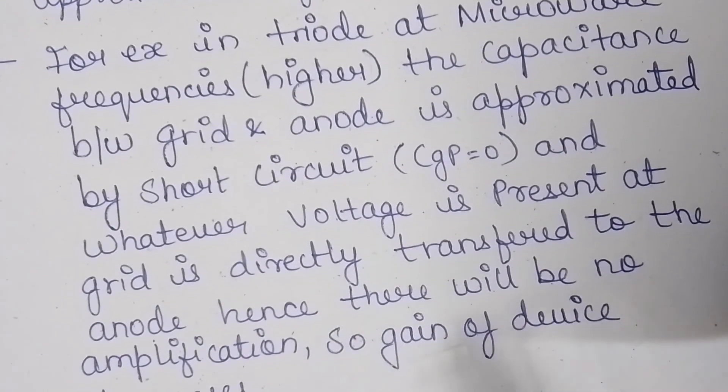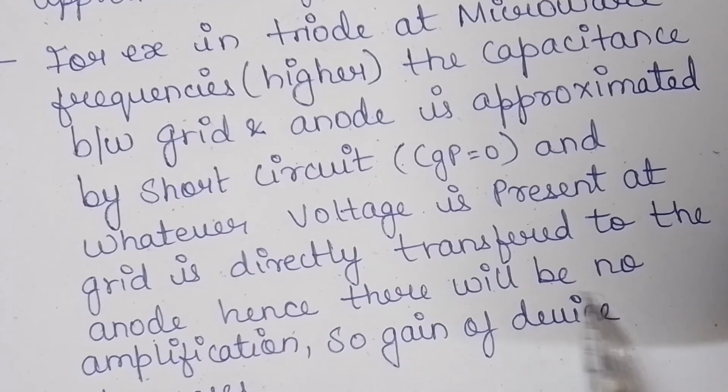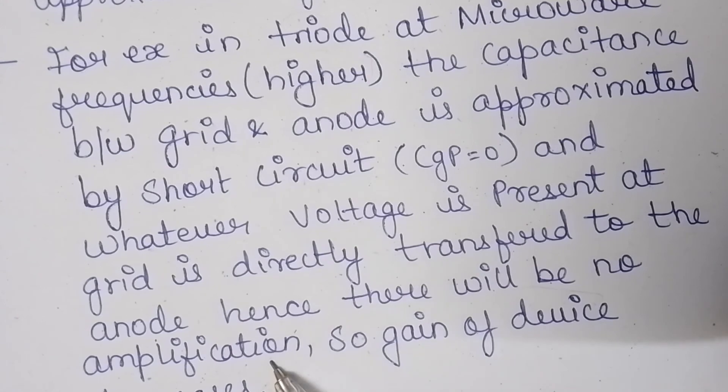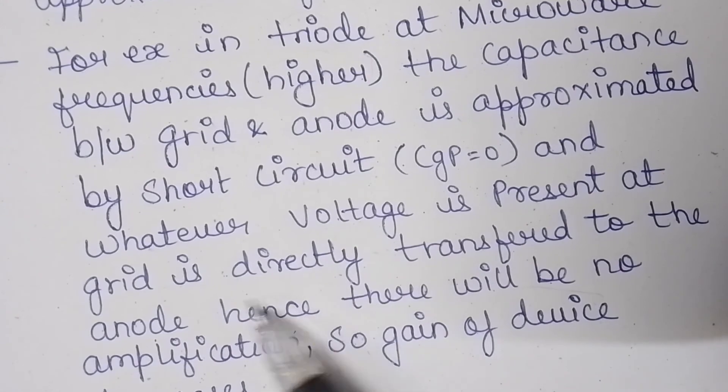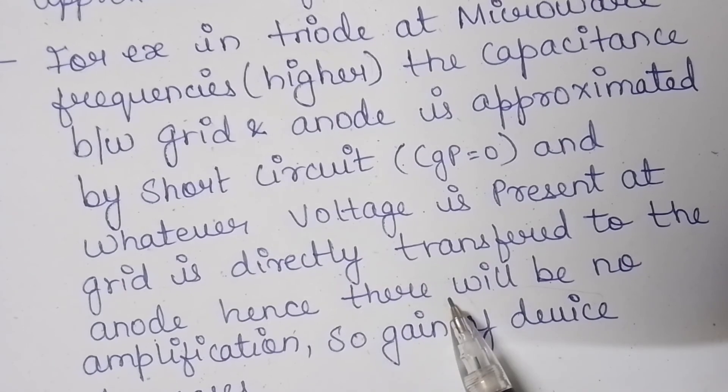Here the device is the triode and the main aim is to increase the amplification. Since there is no amplification and also decrease in the gain, this is a limitation.